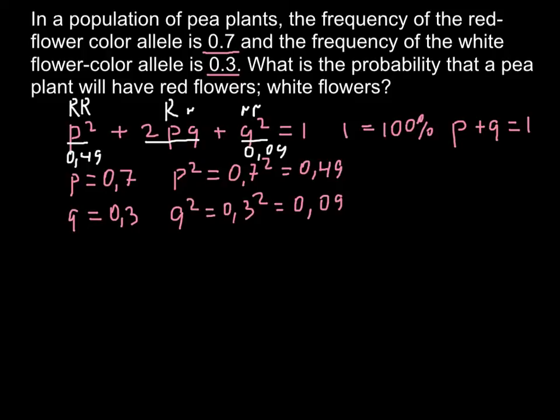And this is also very easy. Similarly, we have to multiply 2 by p and q. So we have to multiply 2 by 0.7 and by 0.3. So if we multiply 0.7 by 0.3, we are going to get 0.21 and multiplied by 2, this is going to be 0.42.